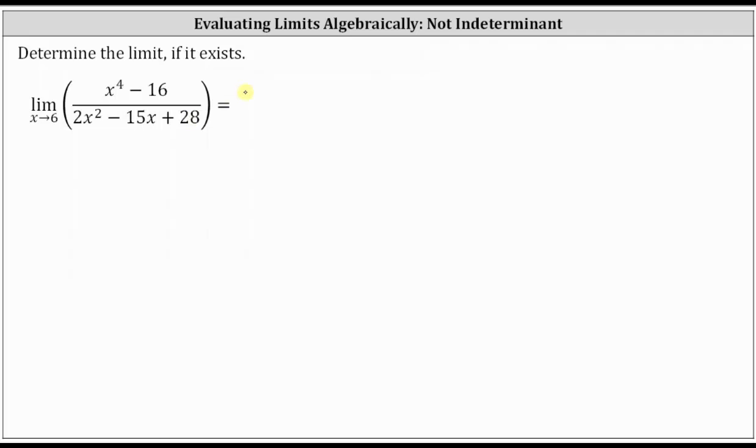So let's perform direct substitution, which would give us six to the fourth minus 16 divided by the quantity two times six squared minus 15 times six plus 28.